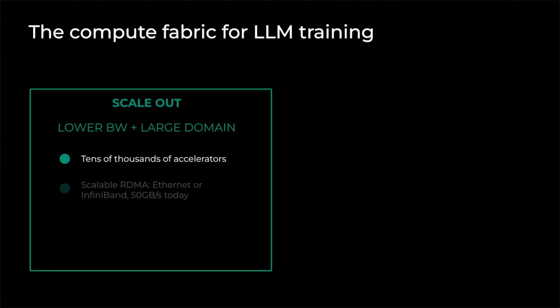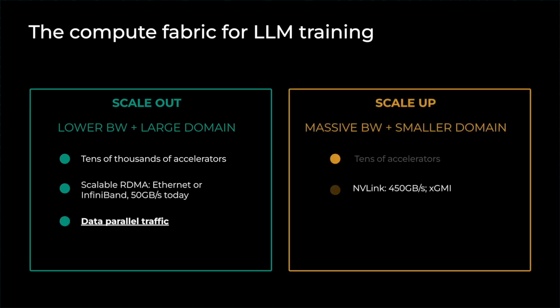As we covered briefly in the previous section, the biggest change from ranking models to LLMs was the increase in compute capacity requirements. This means we now need to build much larger clusters to support training of these models. A big cluster naturally separates into two large domains: one is scale-out, and another is a collection of scale-up domains.